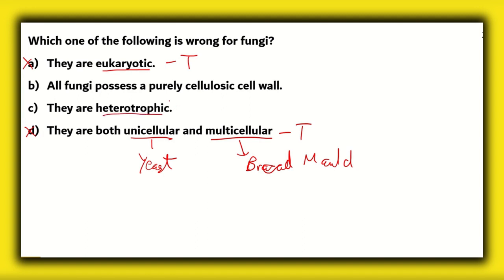That makes option D incorrect. What about option C? They are heterotrophic. This can be considered as true. Now, fungi consume dead and decaying matter. So, therefore, they take sustenance from other organisms which are dead or have started decaying. So, option C, they are heterotrophic, is also correct. The statement is true. So, that means the option is false.